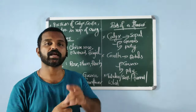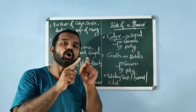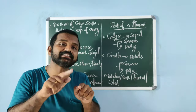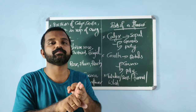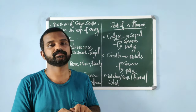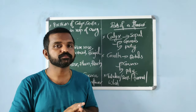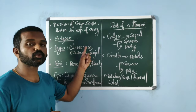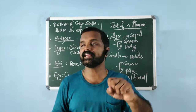Hypogynous: hypo means below, gynous means ovary. Calyx, corolla, and androecium arise from below the ovary — the ovary is superior. Examples: China rose, mustard, brinjal. Perigynous: other three whorls (calyx, corolla, androecium) arise from around the ovary — the ovary is either half inferior or half superior. Examples: rose, plum, peach.